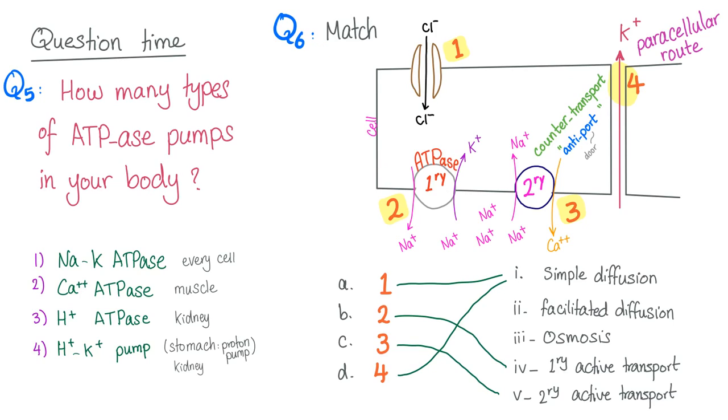Next question. As you see one here, this is what? Simple diffusion. No carrier, no ATPase. How about two? This is the primary active transport, primary sodium potassium ATPase. How about three? This is secondary active transport, secondary to the primary. It depends on the primary. This is what you call the sodium calcium exchanger or sodium calcium antiport or sodium calcium counter transport. How about four? Four is the paracellular route. This is simple diffusion.